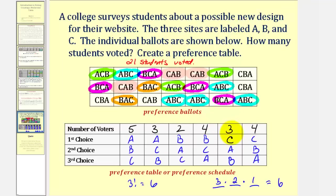So again, these are the preference ballots and this is the preference table. Based upon the voting method, we would normally use this preference table to gather the information needed to select the winner. I hope you found this introduction helpful.